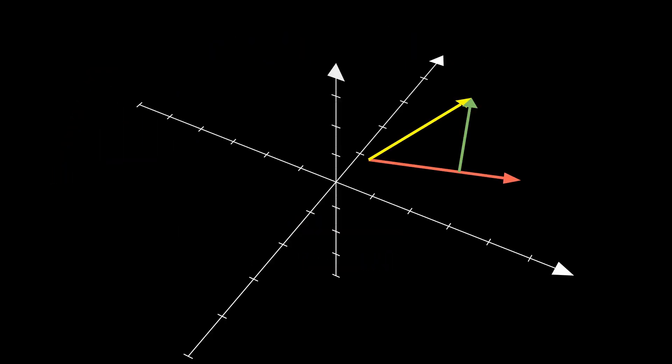Manually visualizing the triple cross product form of the rejection operator requires some uncomfortable right-hand contortions. Here's an animation of the cross products that contribute to this rejection computation. In this animation, the vector u is in red, v is in yellow, and the rejection is in green.